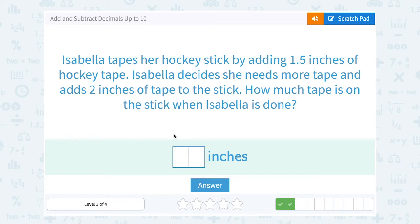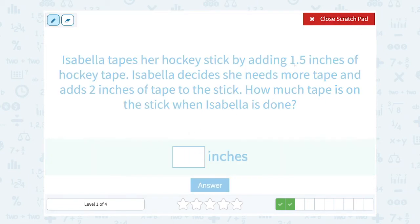Isabella tapes her hockey stick by adding 1.5 inches of hockey tape. Isabella decides she needs more tape and adds 2 inches of tape to the stick. How much tape is on the stick when she's done? Well if she starts out, she puts 1.5 inches of tape on there and then she adds another 2 inch. Well that's telling us to add it together for the total amount.